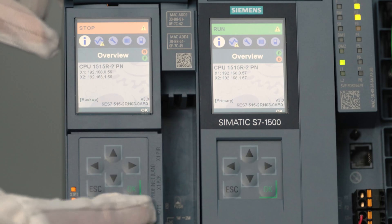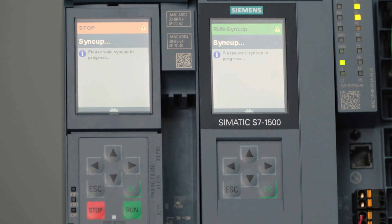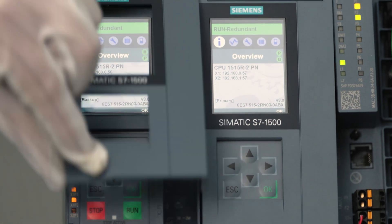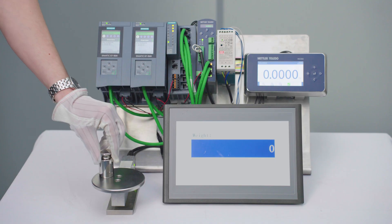So we switch the PLC back to run and it will start to synchronize with the backup PLC again. Now that the primary PLC is in sync again, we can apply 200 grams of weight and we see it's still working.